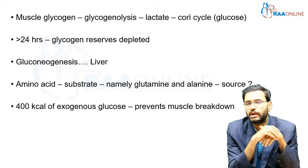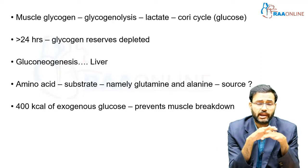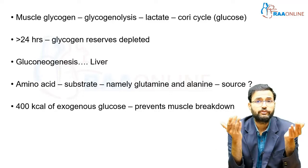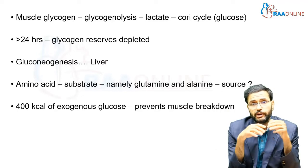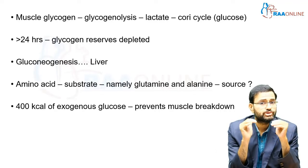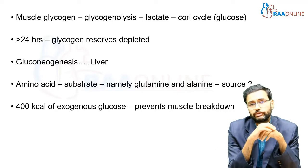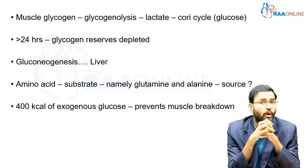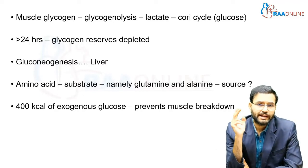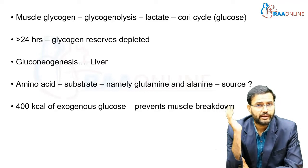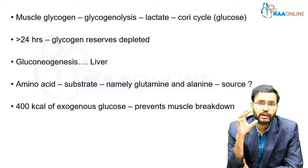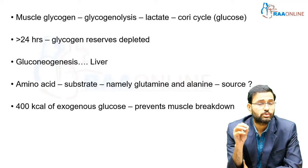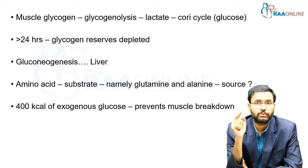If a person is starving for more than 24 hours, glycogen reserves get depleted and the body starts looking for alternative sources of glucose. This production of new glucose is called gluconeogenesis, or de novo production of glucose, and occurs within the liver. The most important substrates are amino acids — primarily glutamine and alanine. Approximately 400 kilocalories of exogenous glucose is required to prevent muscle breakdown, as muscle is the main source of amino acids used as substrate for gluconeogenesis.